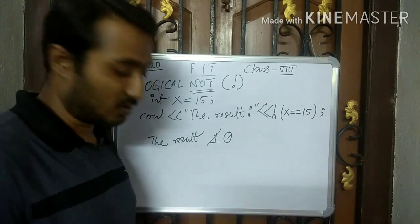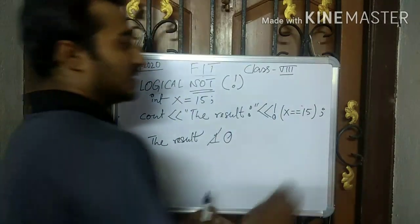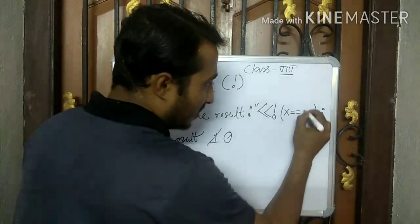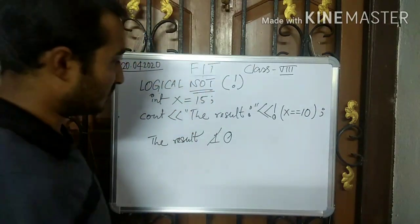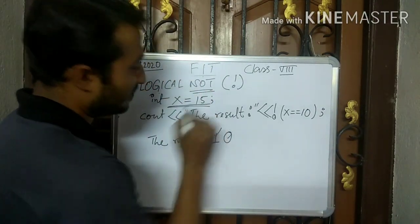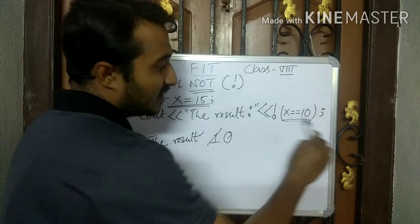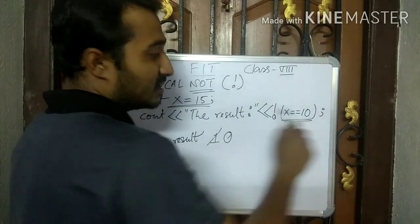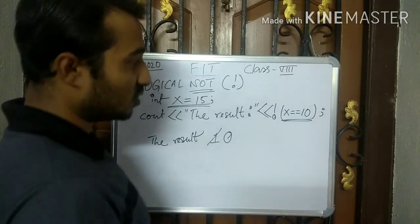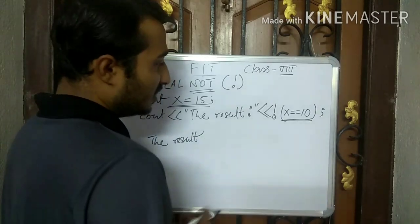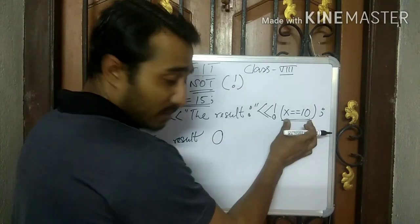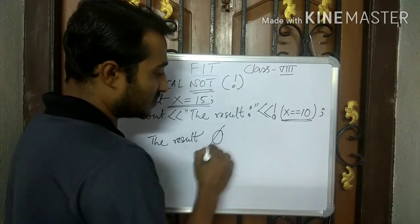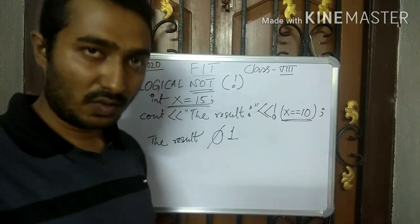The NOT operator reverses the value. So if we change the condition value to 10: the actual value of x is 15, the condition given is x equals equals 10. So that condition is false. Actually it should return 0 because of this, but the NOT symbol is used, that's why the output will be 1.